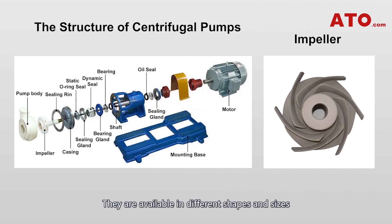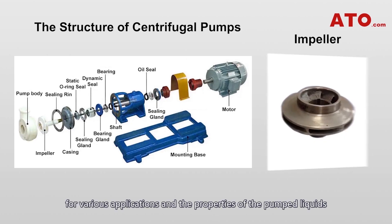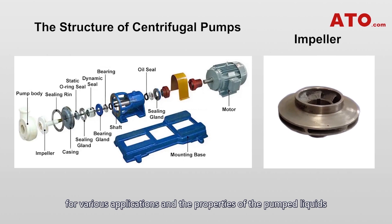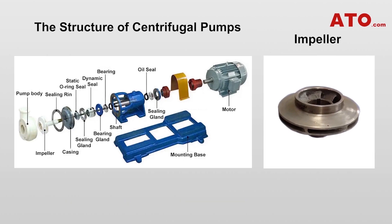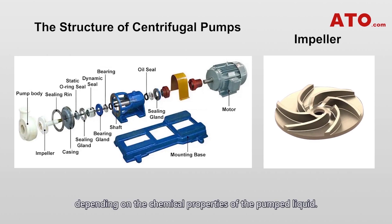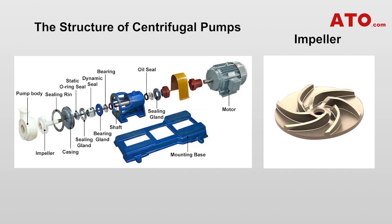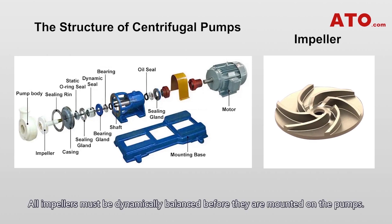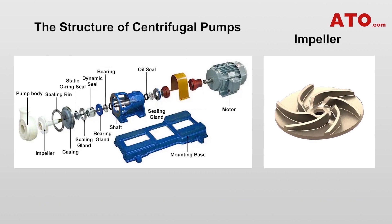Impellers are available in different shapes and sizes for various applications and properties of the pump liquid, and they are composed of a set of backward curved blades. They can be made of a range of materials depending on the chemical properties of the pump liquid. All impellers must be dynamically balanced before they are mounted on the pumps.